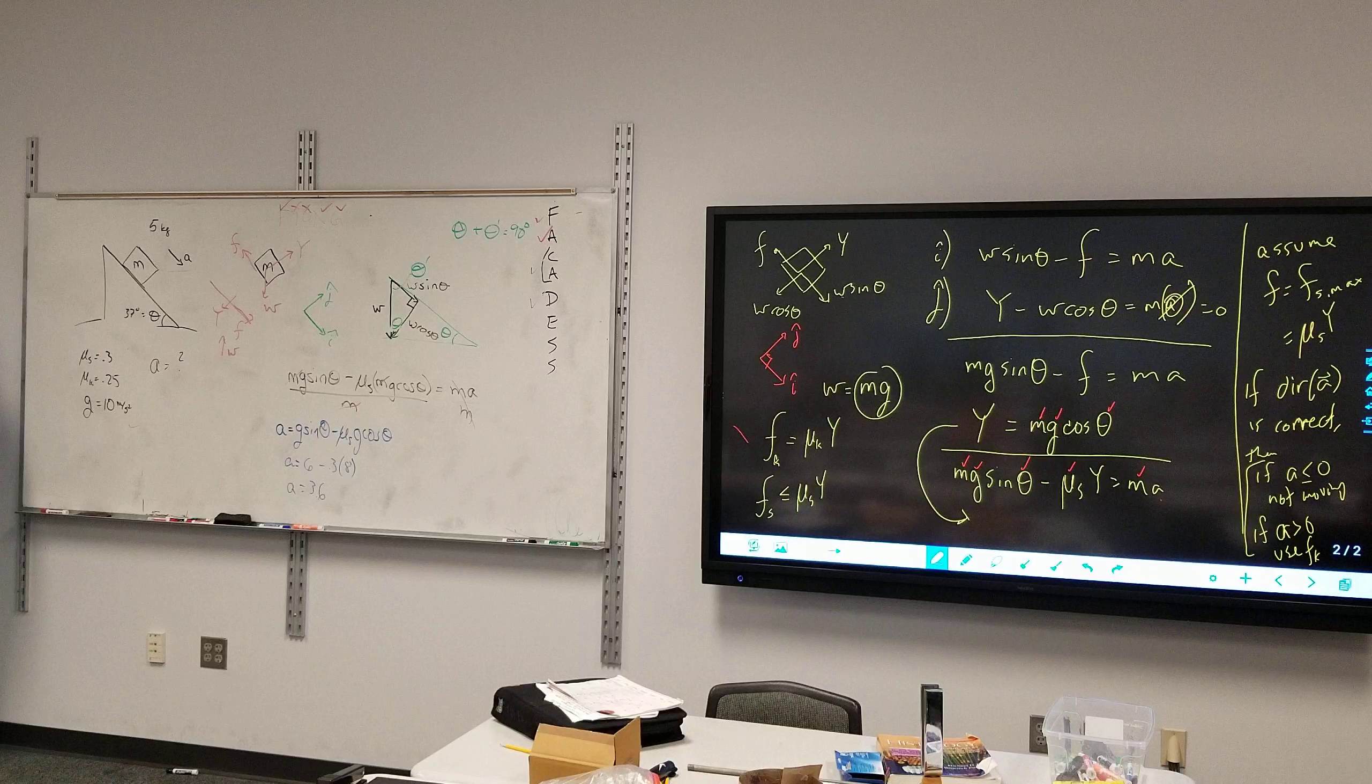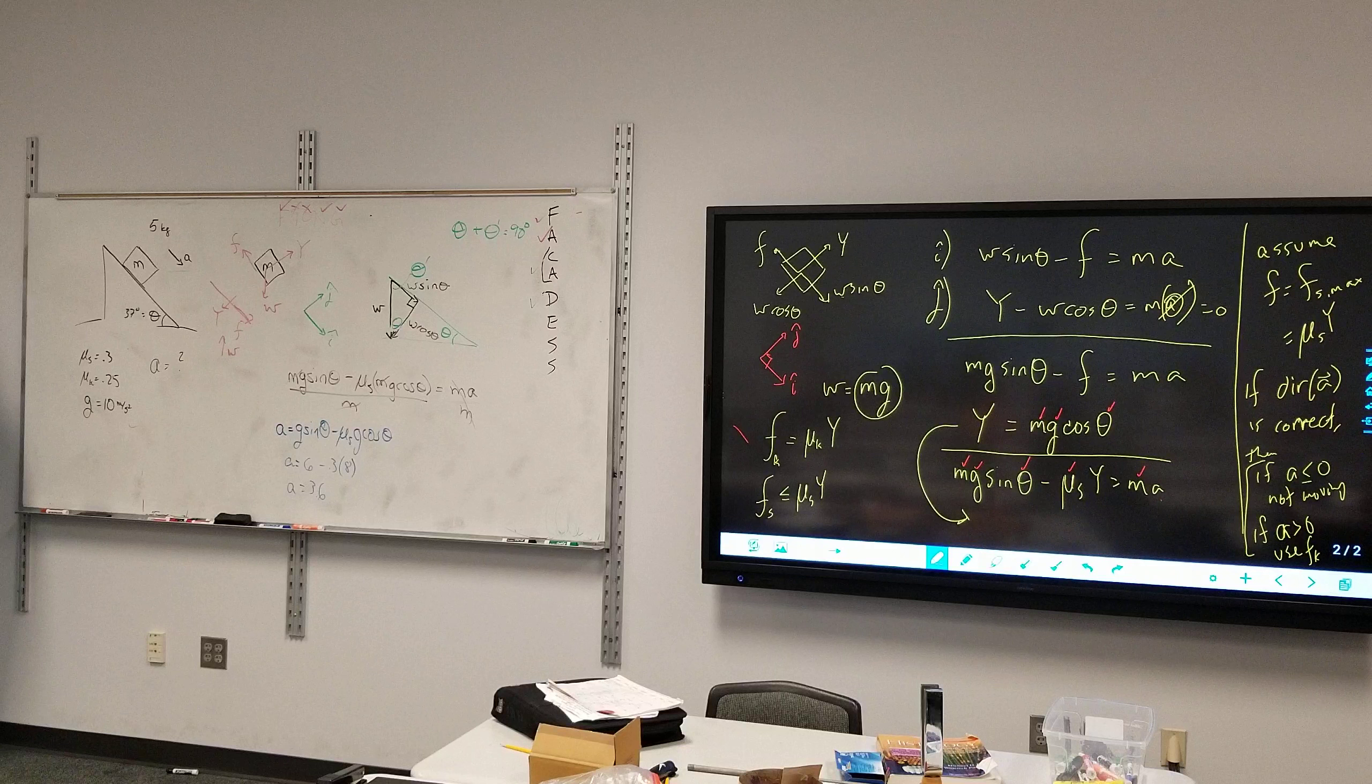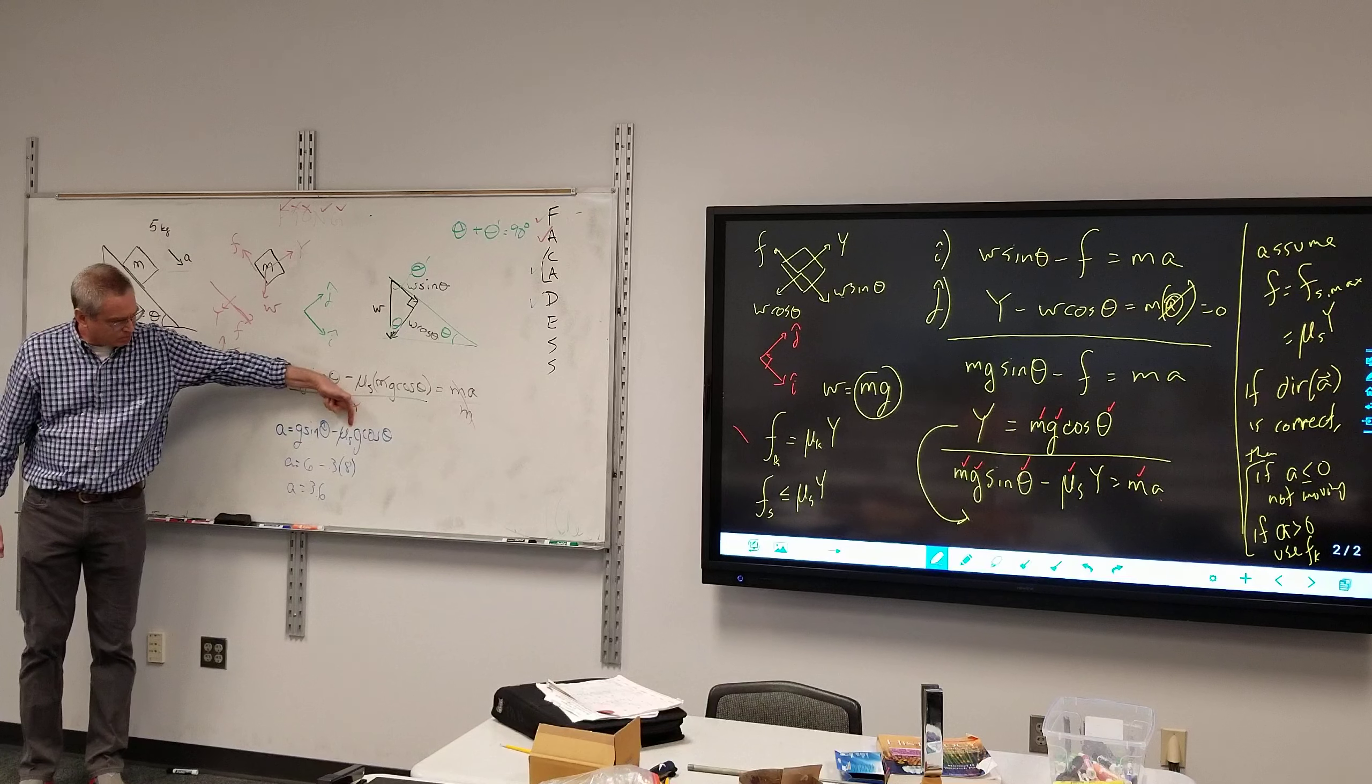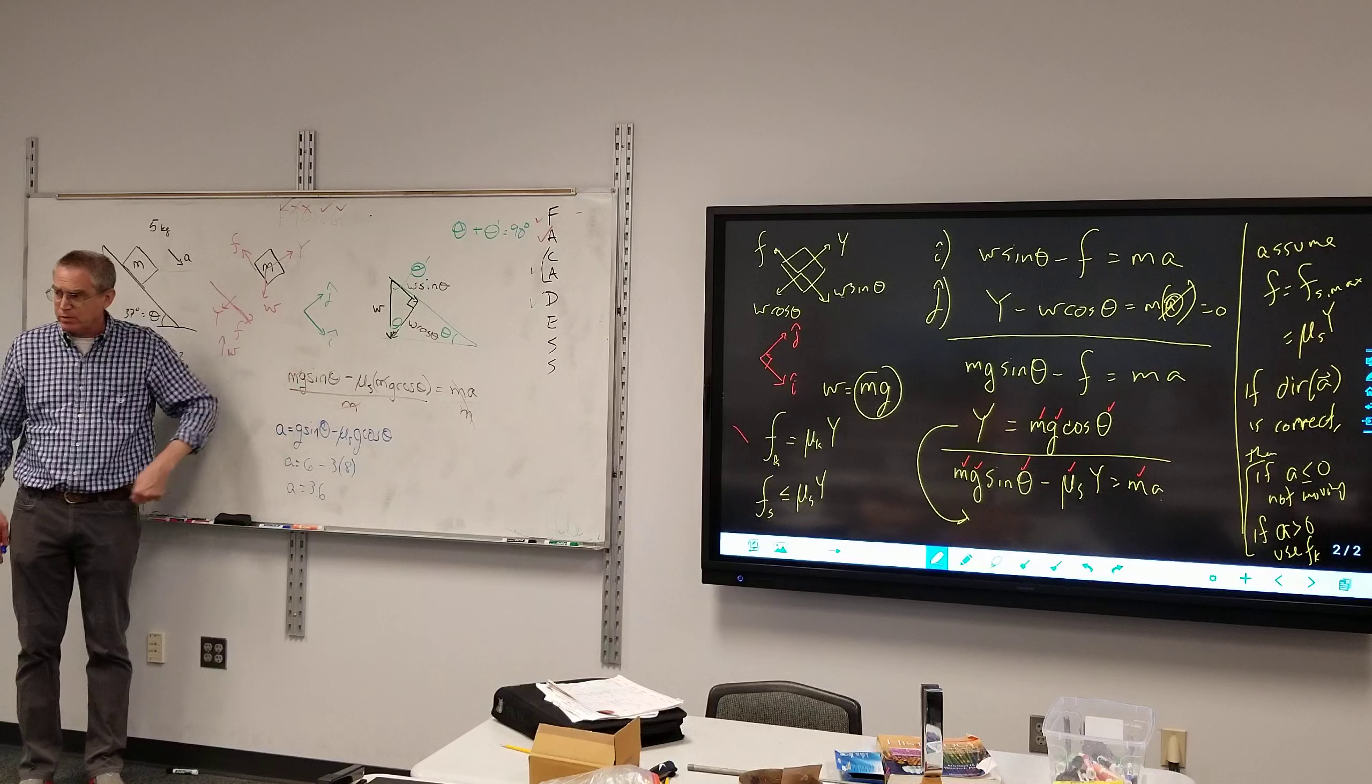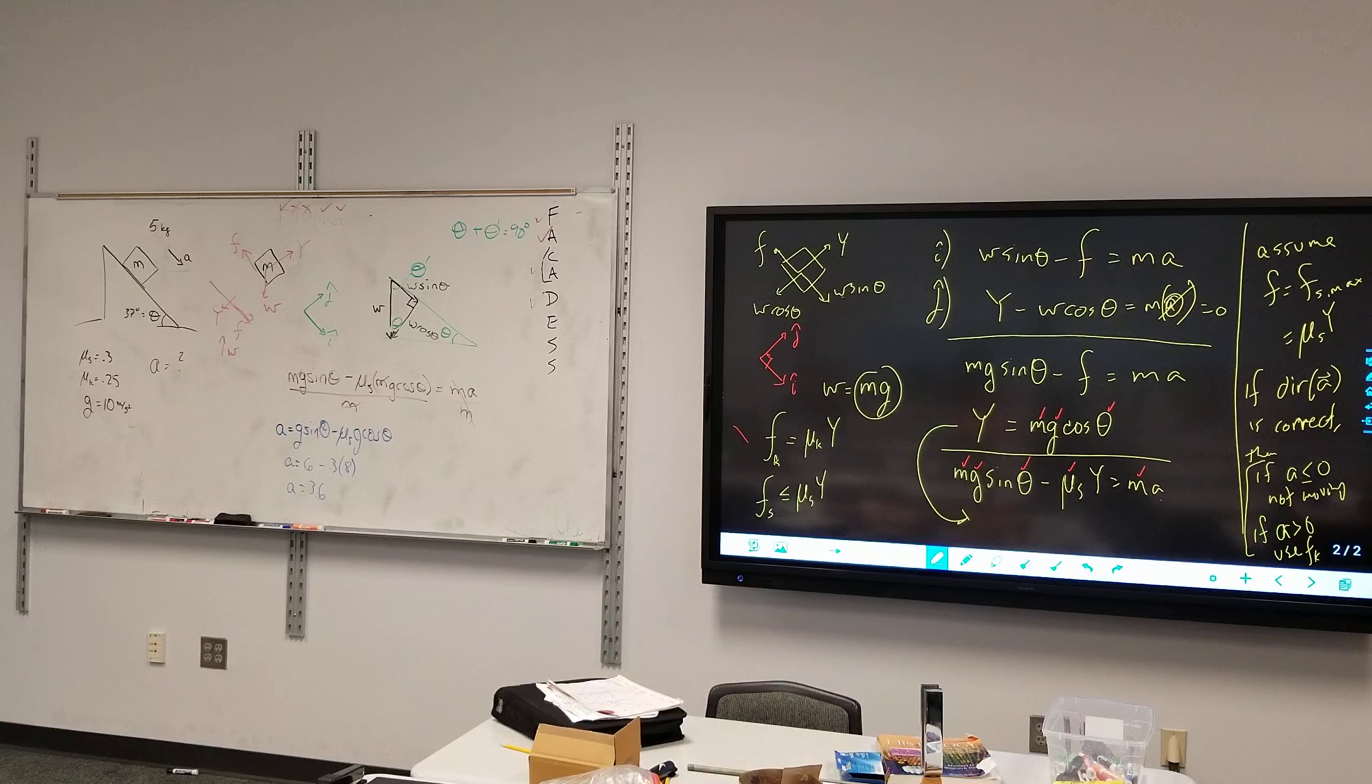And so this ends up being 3.6. All right, are we done with the problem? Is that the final answer? Other than units, is that the final answer? How'd you get 8? Make a mistake. 8 times .3. Mu_s is .3. Right. G is 10. Right. Cosine 37 degrees is about 0.8. So g cos theta is 8 times .3. I ground it.